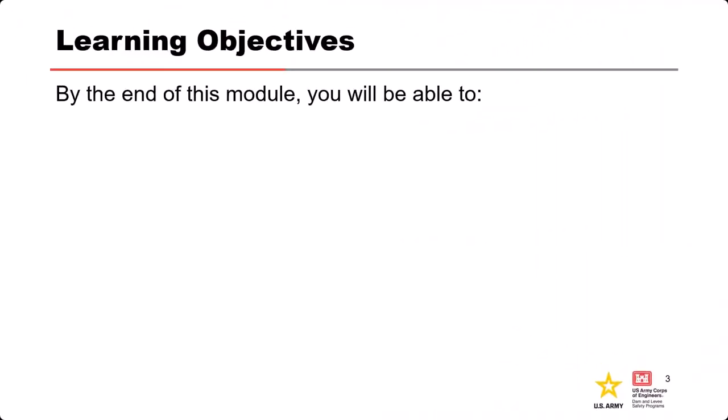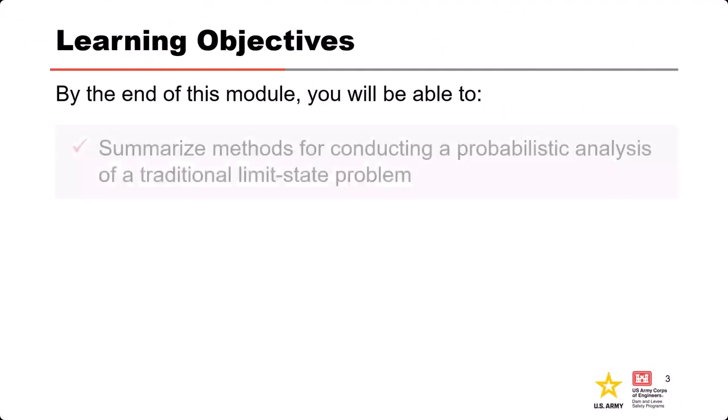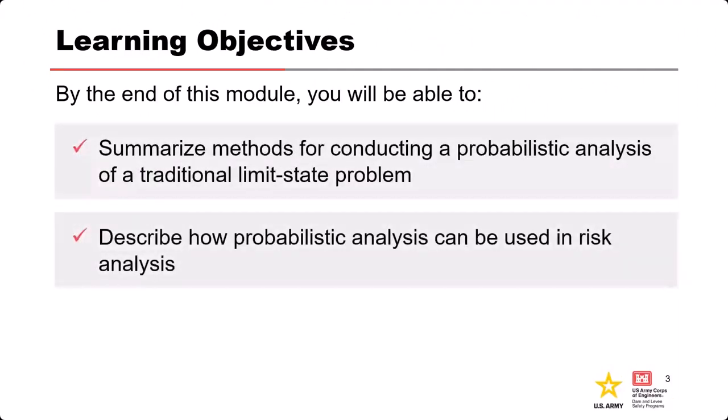By the end of this module, you should be able to summarize methods for conducting a probabilistic analysis of a traditional limit state problem, such as a slope stability analysis, and describe how probabilistic analysis can be used in risk analysis — how we use these results when we're actually making elicitations on nodes in an inventory.